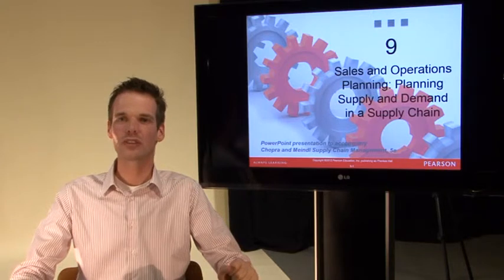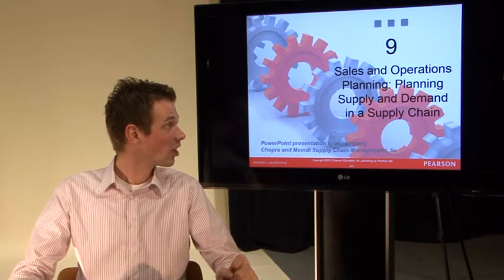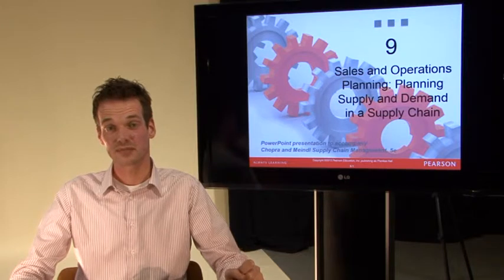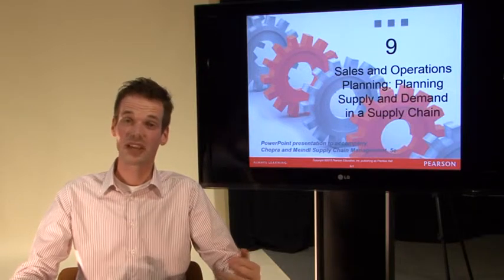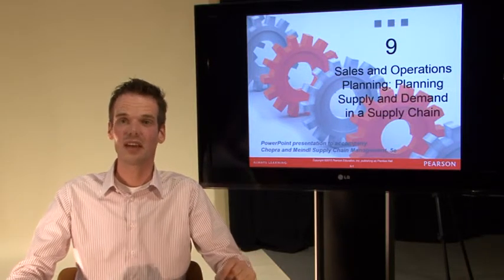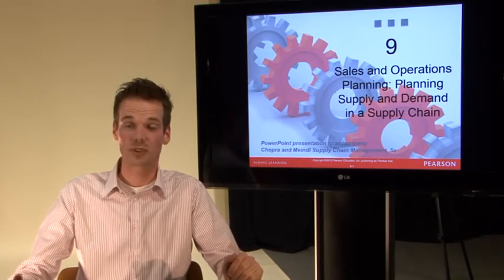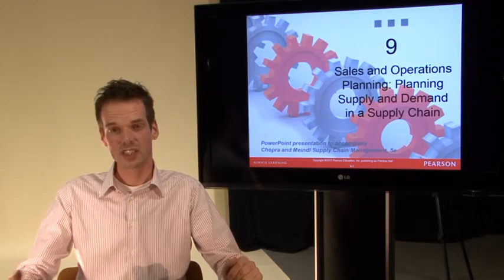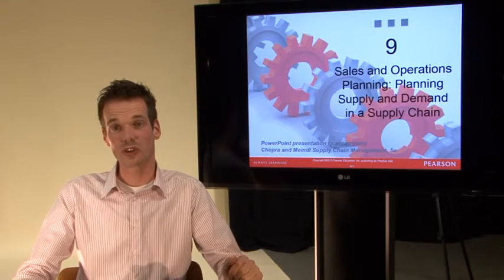Hello and welcome to this video series about Chapter 9: Sales and Operations Planning — planning supply and demand in a supply chain. Chapter 9 refers back to Chapter 8, where we made an aggregate plan for the supply chain. We also created an Excel file in Chapter 8 to produce that aggregate plan, and we use that same Excel file here in Chapter 9.